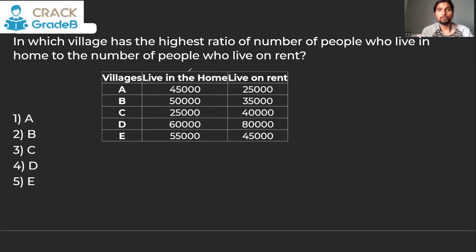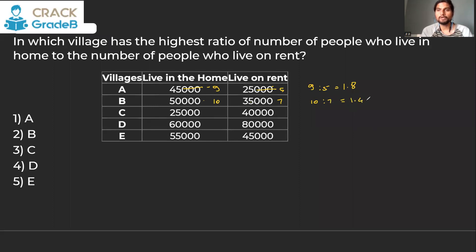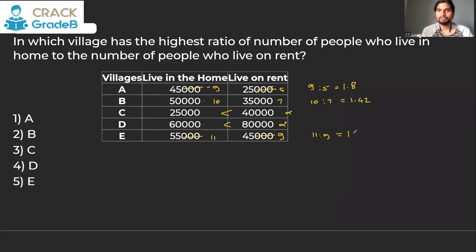Question 3: Which village has the highest ratio of number of people who live in home to rent? The ratio for village A is 9:5, which is 1.8 in fraction form. For another village it is 10:7, approximately 1.42. Villages where home dwellers are fewer than rent dwellers have a ratio less than 1 and are not considered. The ratio 11:9 equals approximately 1.22. So village A, with a ratio of 1.8, is the highest.